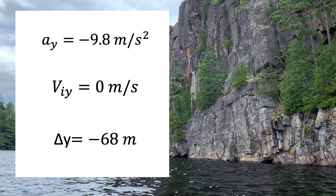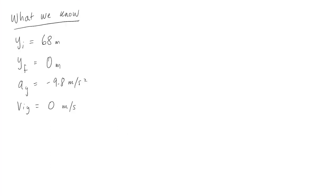The acceleration is going to be equal to negative 9.8 meters per second squared. The initial velocity is going to be 0 meters per second because we're assuming the person goes straight down. And the person's change in position, yf minus yi, is negative 68 meters. So let's try to solve.